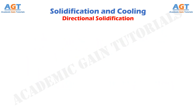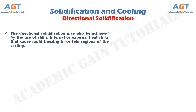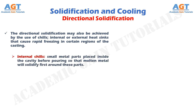Directional solidification may also be achieved by the use of chills — internal or external heat sinks that cause rapid freezing in certain regions of the casting. Internal chills are small metal parts placed inside the cavity before pouring so that molten metal will solidify first around these parts.